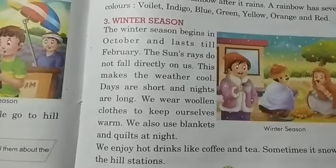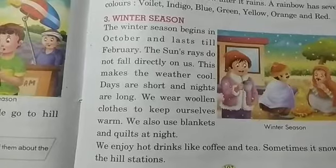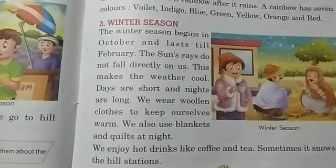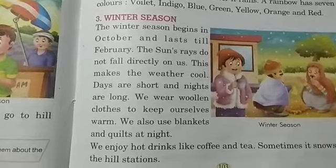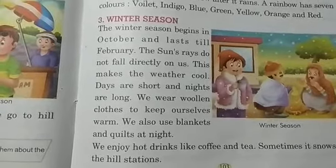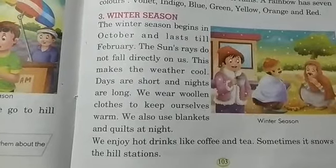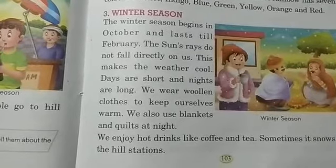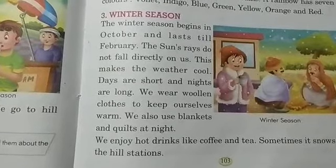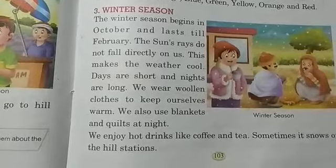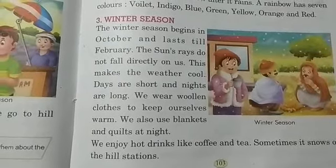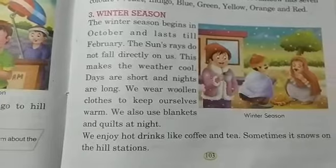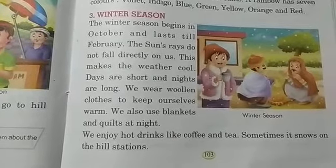Winter season starts from October and ends in February. Sun rays are not bright because they don't fall directly on us, and the weather is very cold. Days are short and nights are long. We wear woolen cloth and use blankets and quilts at night. We drink hot drinks like coffee and tea, and when we visit hill stations, we see snow.